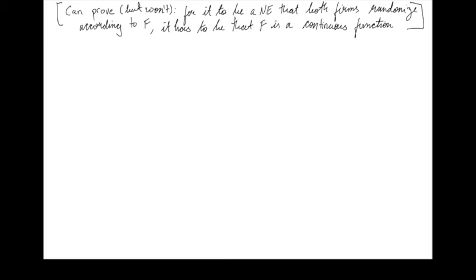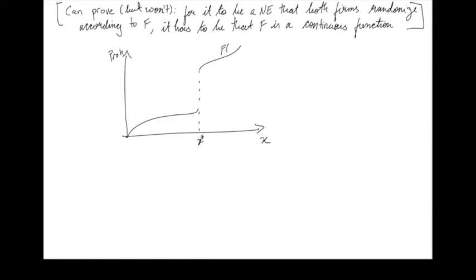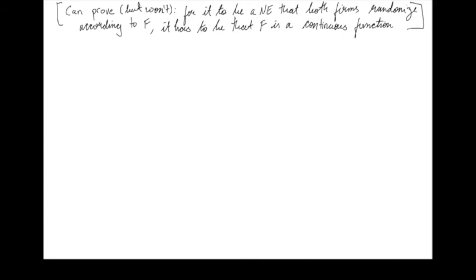One can prove that for it to be a Nash equilibrium with both players randomizing according to CDF f, f must be a continuous function. I won't prove that here, but the idea is that if f is not continuous, there are jumps — mass points. At any such mass point x*, you can use the same arguments from above to rule out pure strategies and contradict the existence of a jump in the CDF. So we'll assume f is continuous, and we'll see that the f we solve for will indeed be continuous.